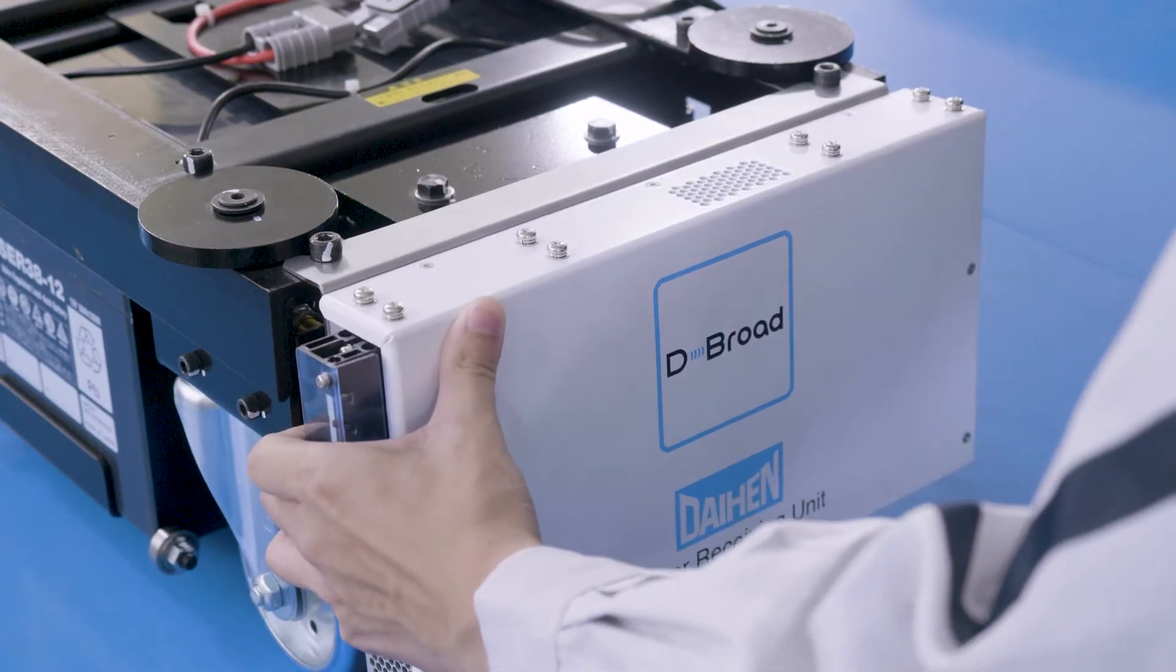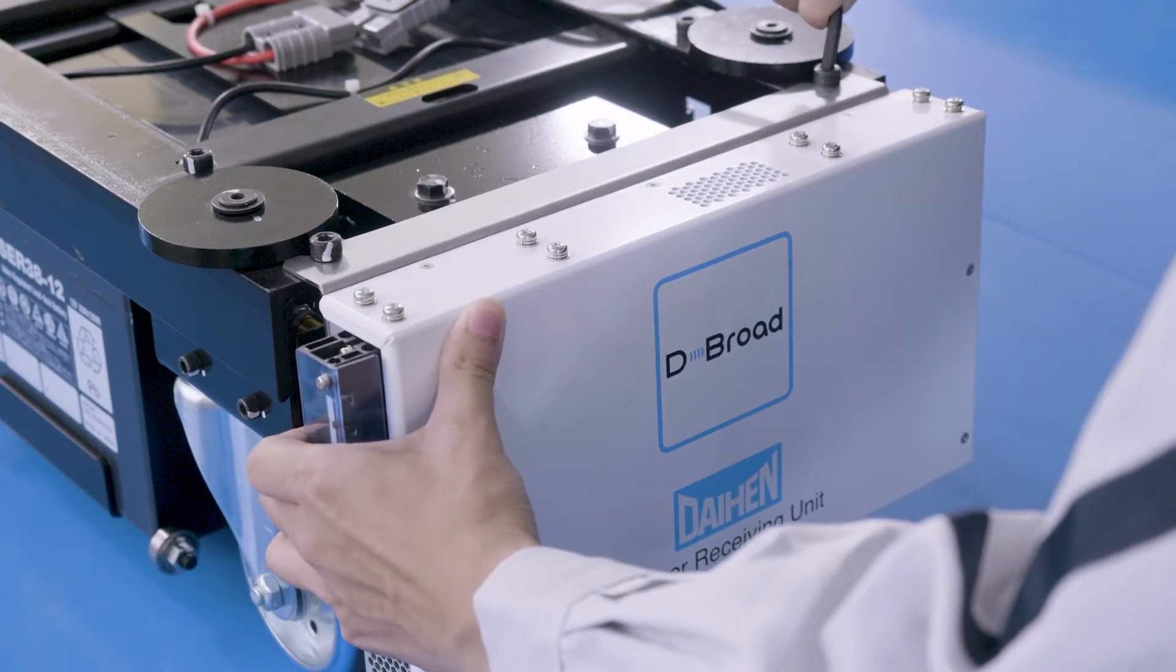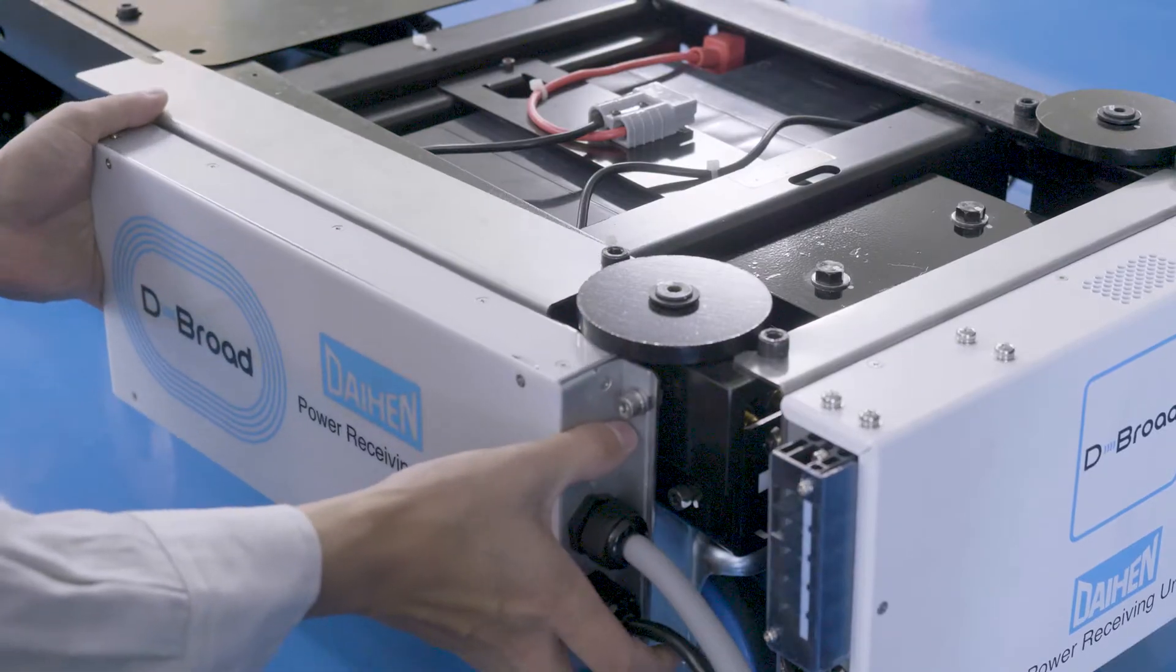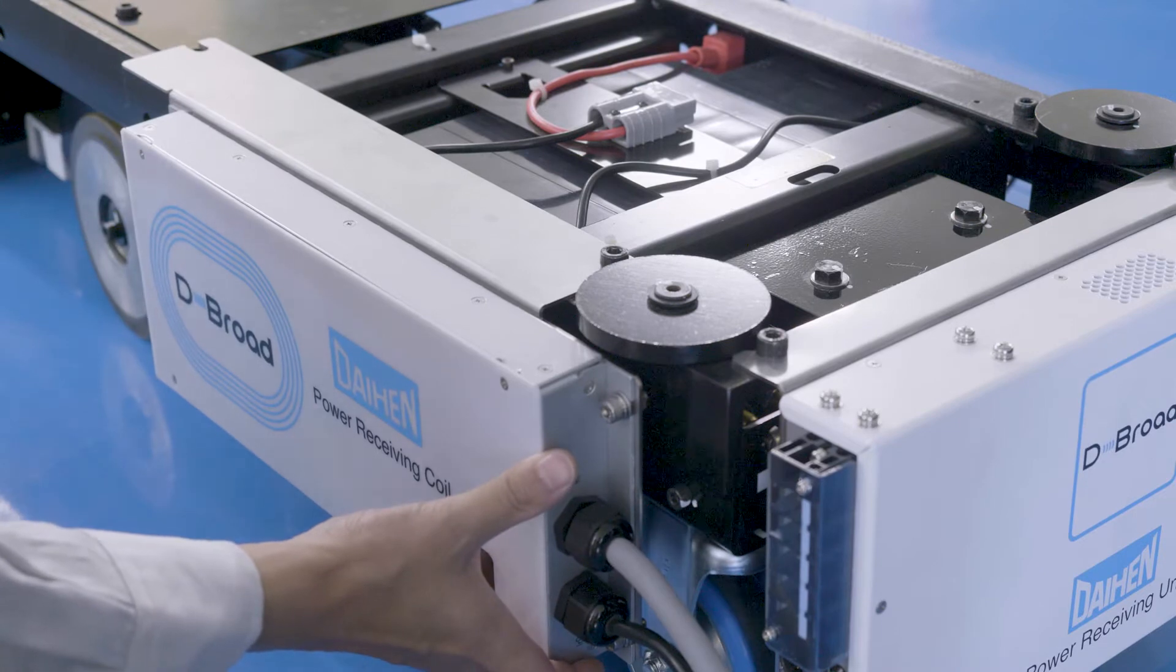Mount the power receiving unit on the AGV. Mount the power receiving coil unit on the AGV.